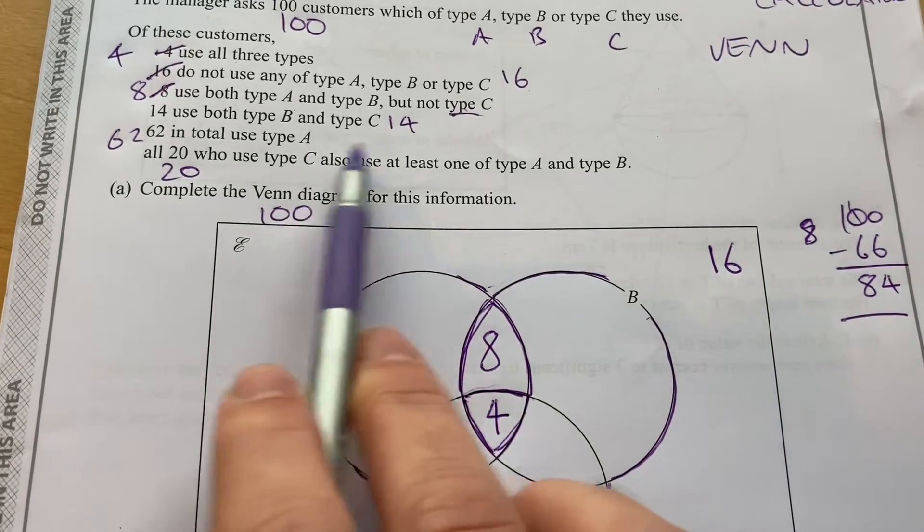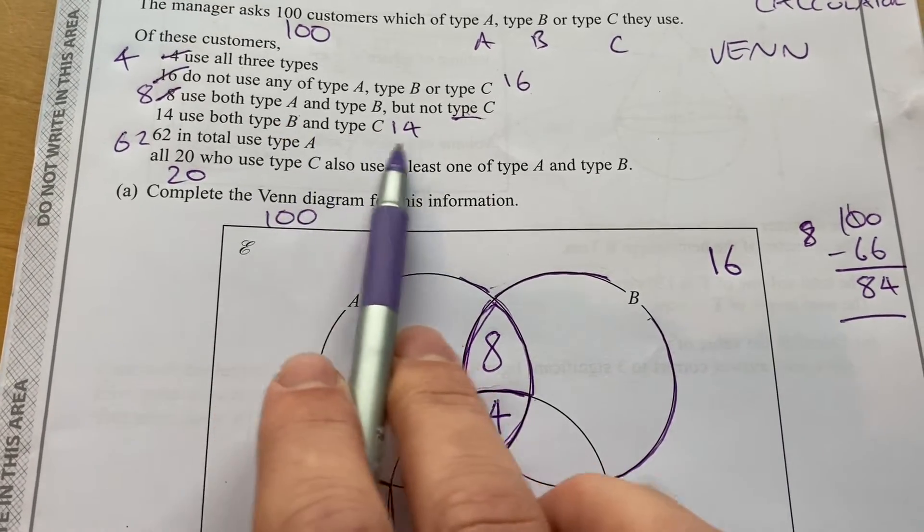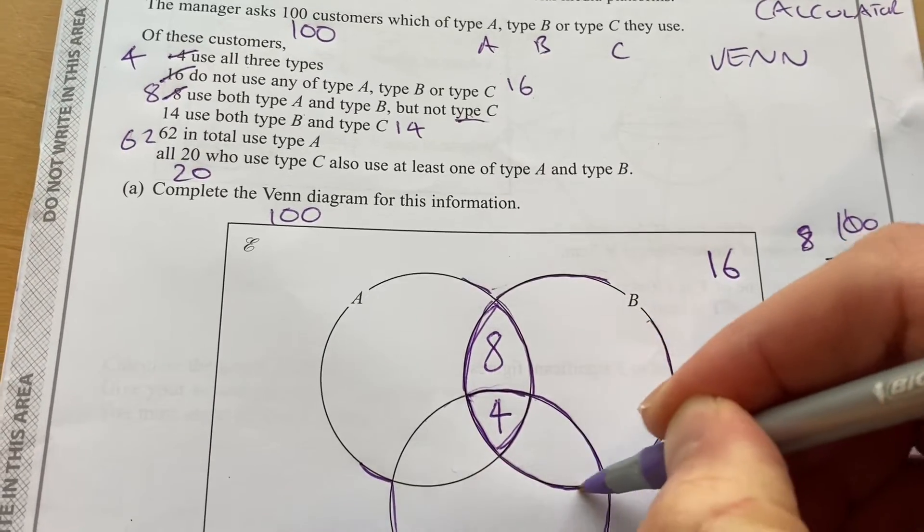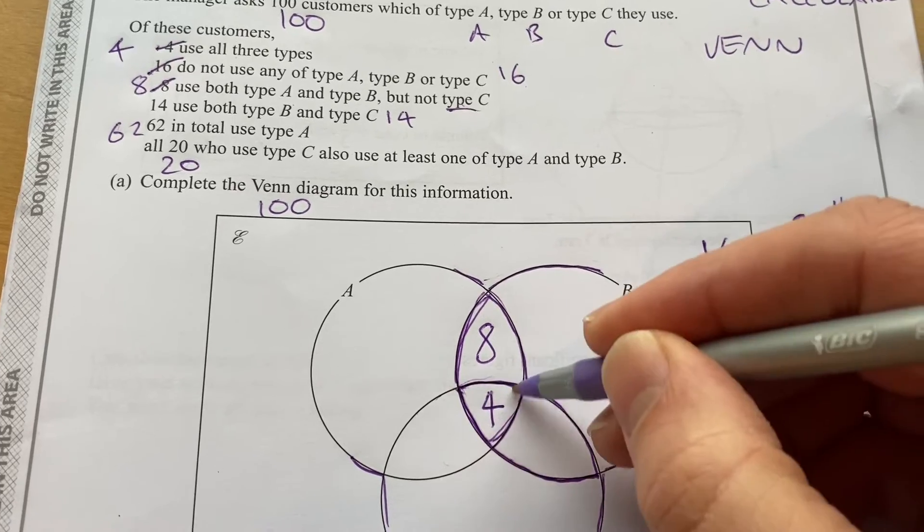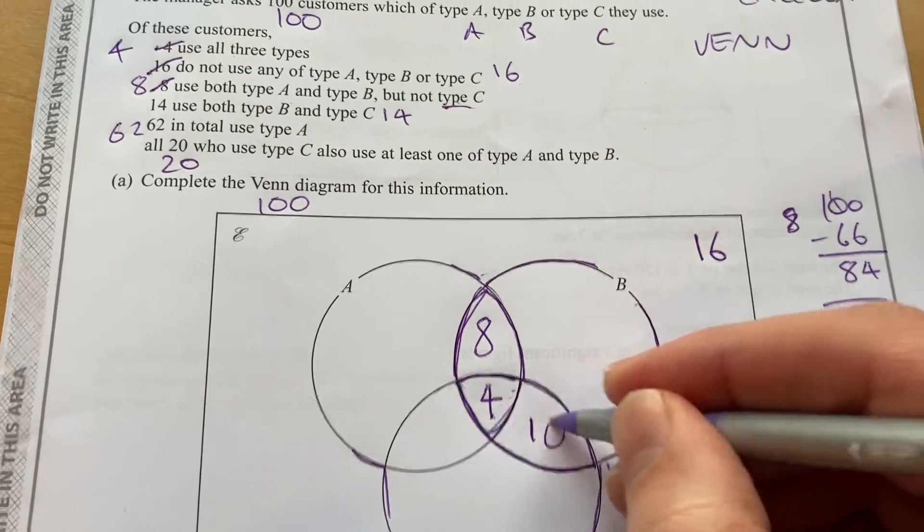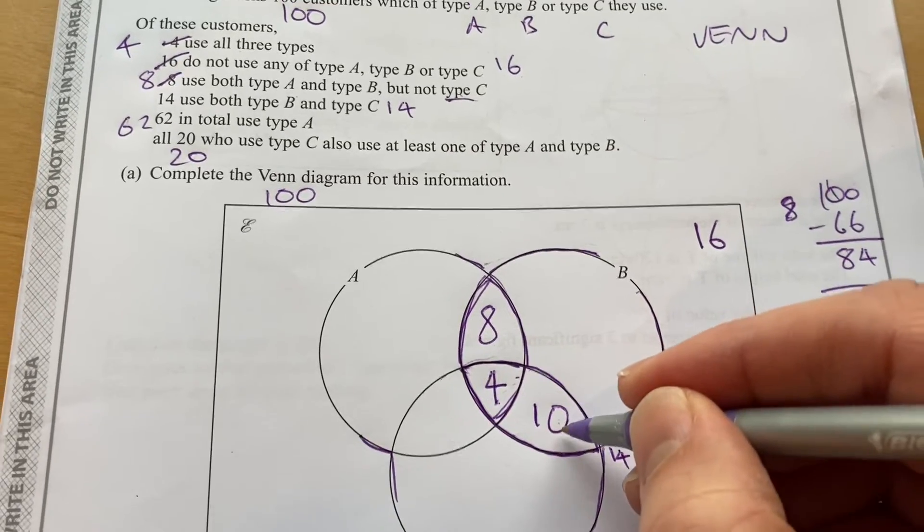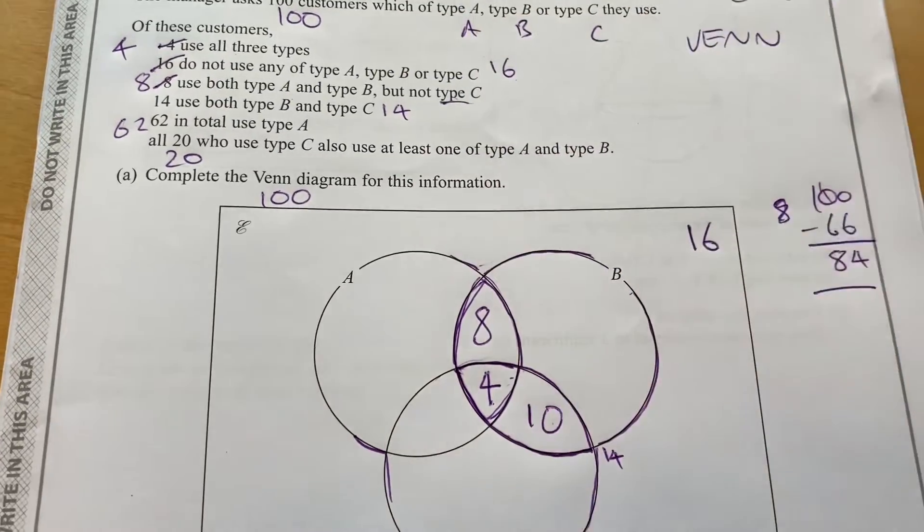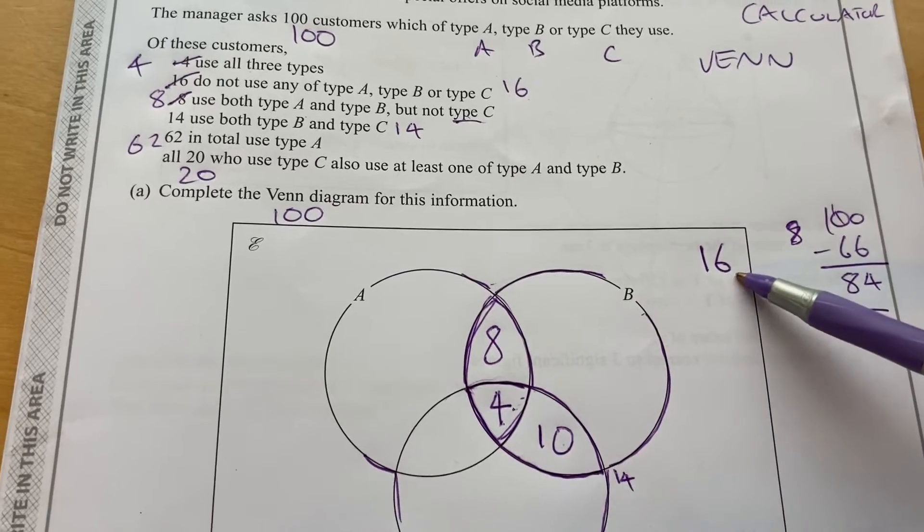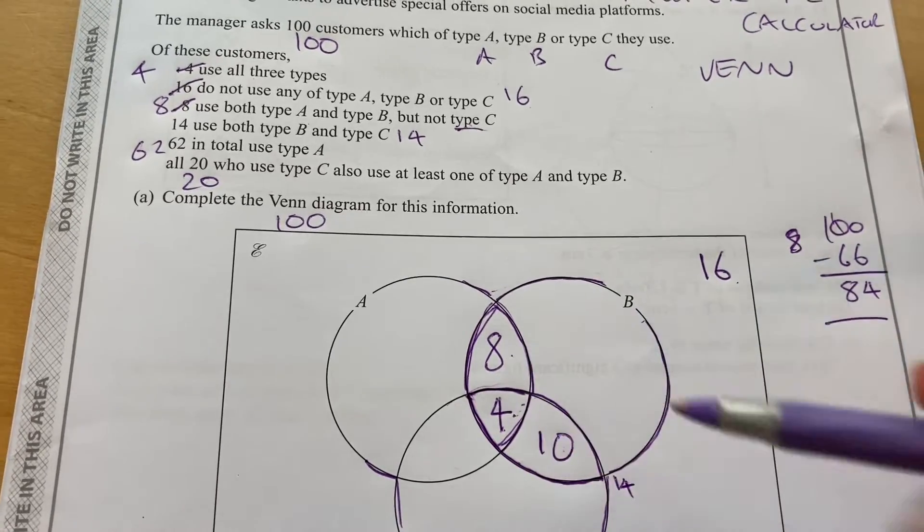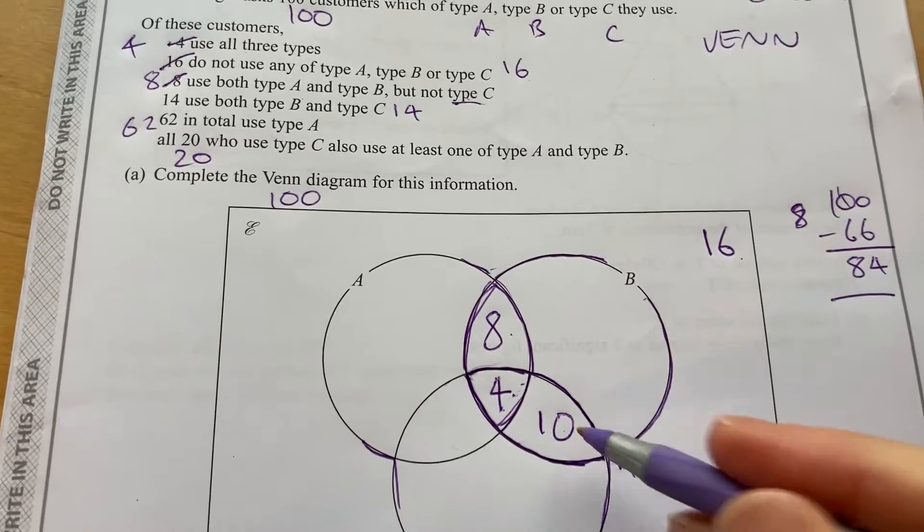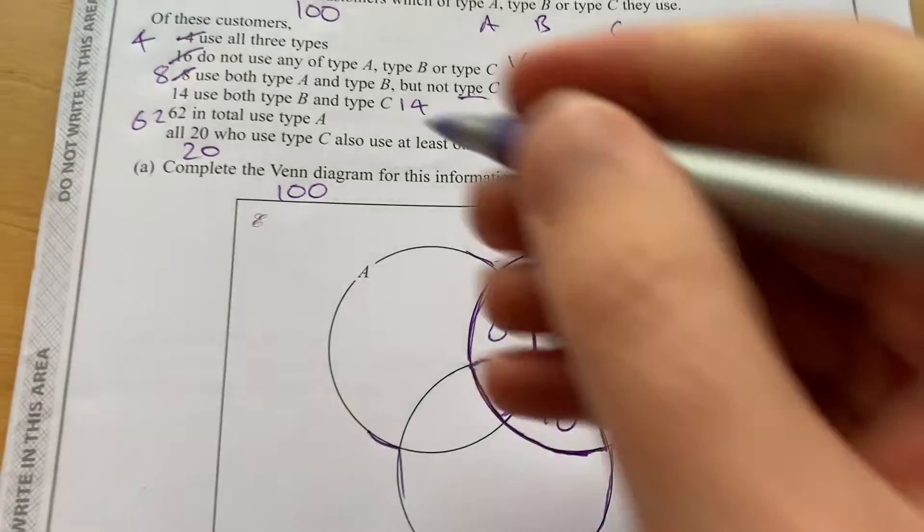Now 14 use both type B and type C, but they don't talk at all about A. So this section here is B and C, but some of it is A, and that section's got to add up to 14. But four of them use A as well, so we're going to put 10. That's the first time I'm actually going to use a number that isn't listed, that we've had to calculate.